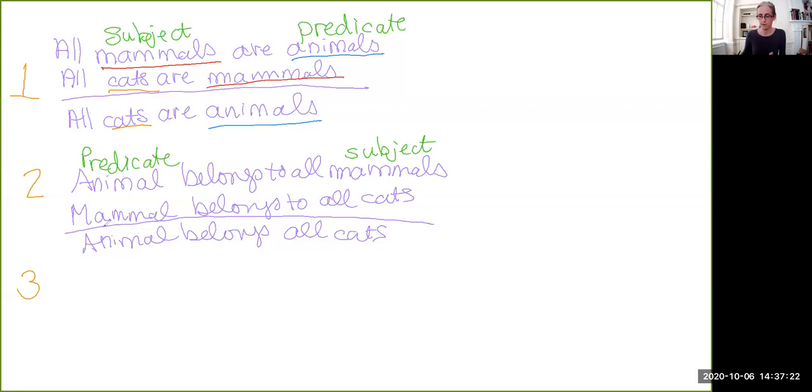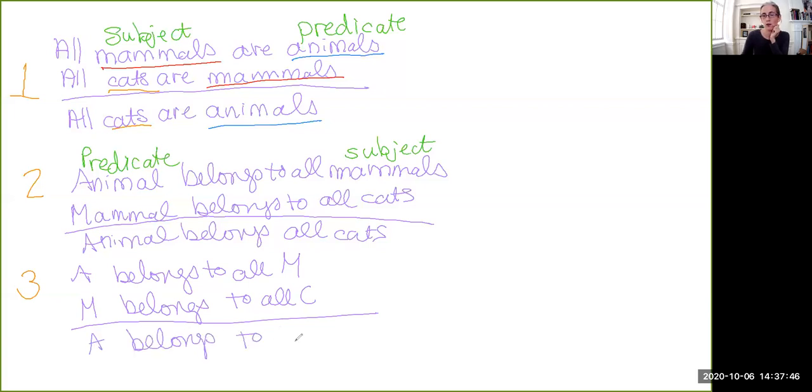So we could represent this argument as A belongs to all M. M belongs to all C. Therefore, A belongs to all C. So now we are getting something which is kind of like half English, half symbolic.